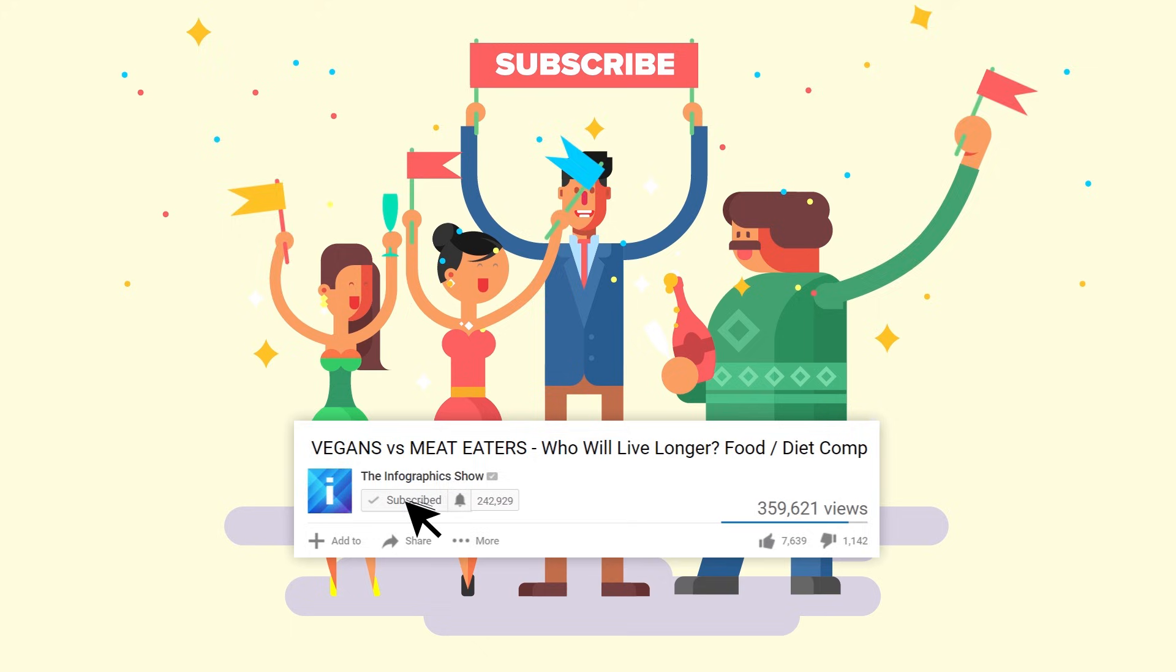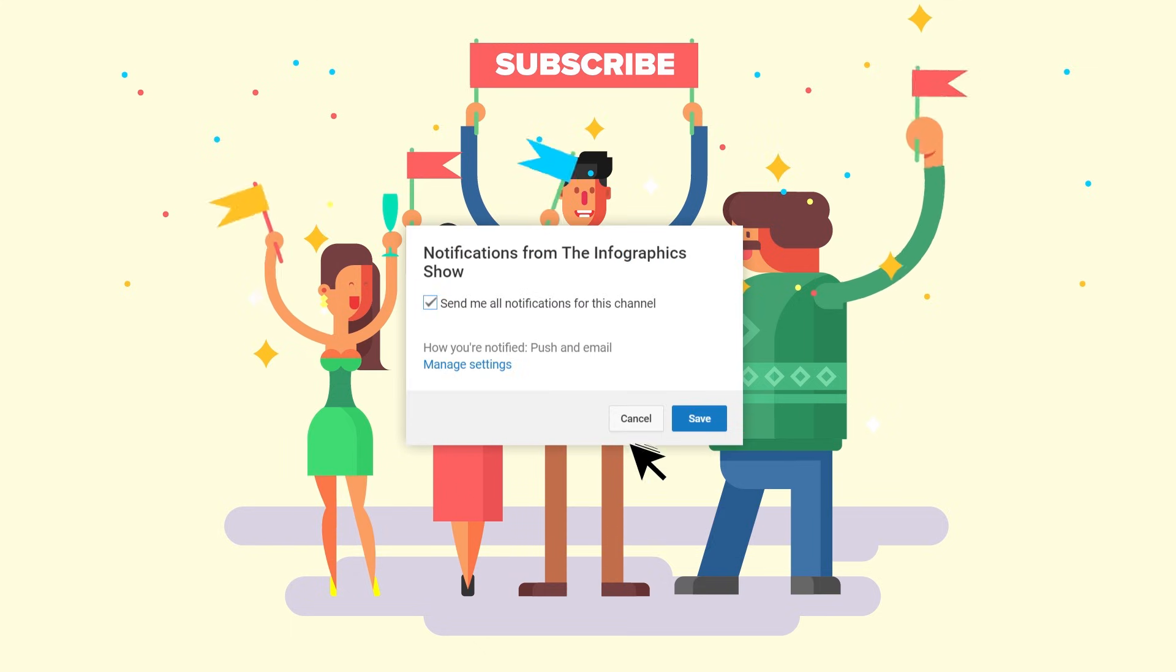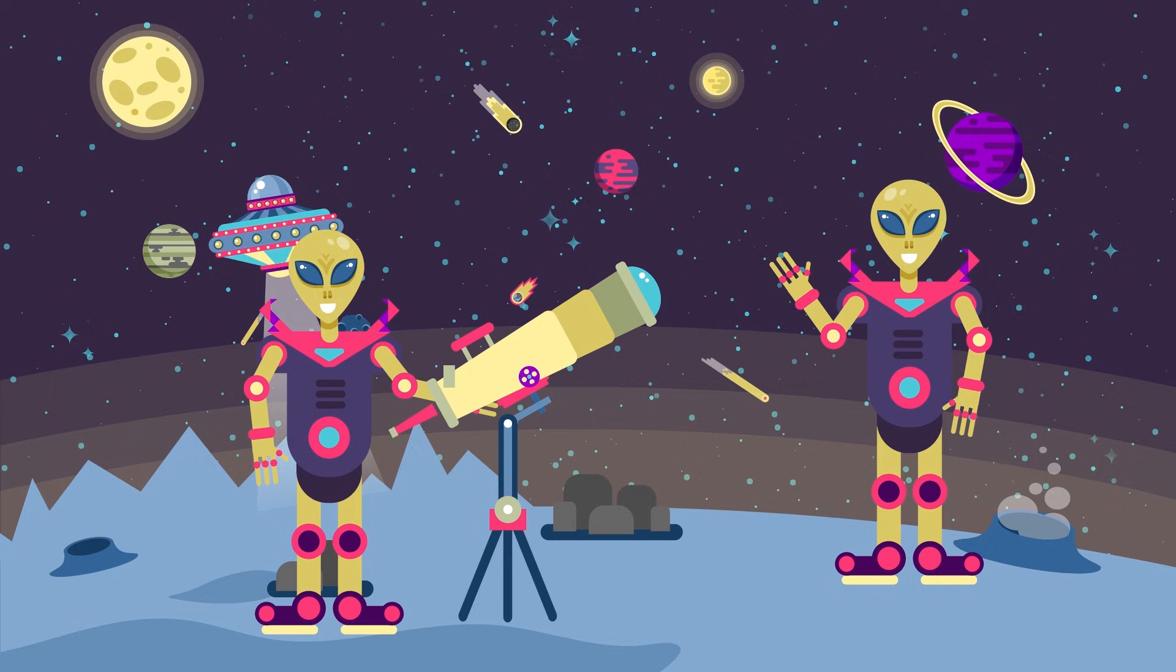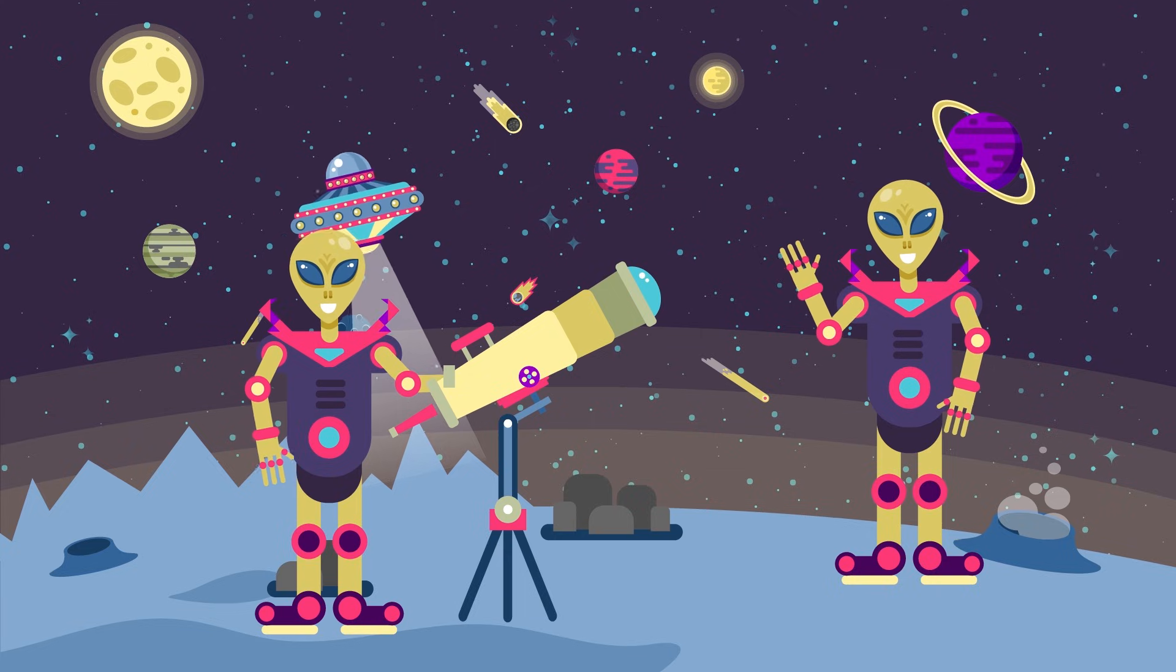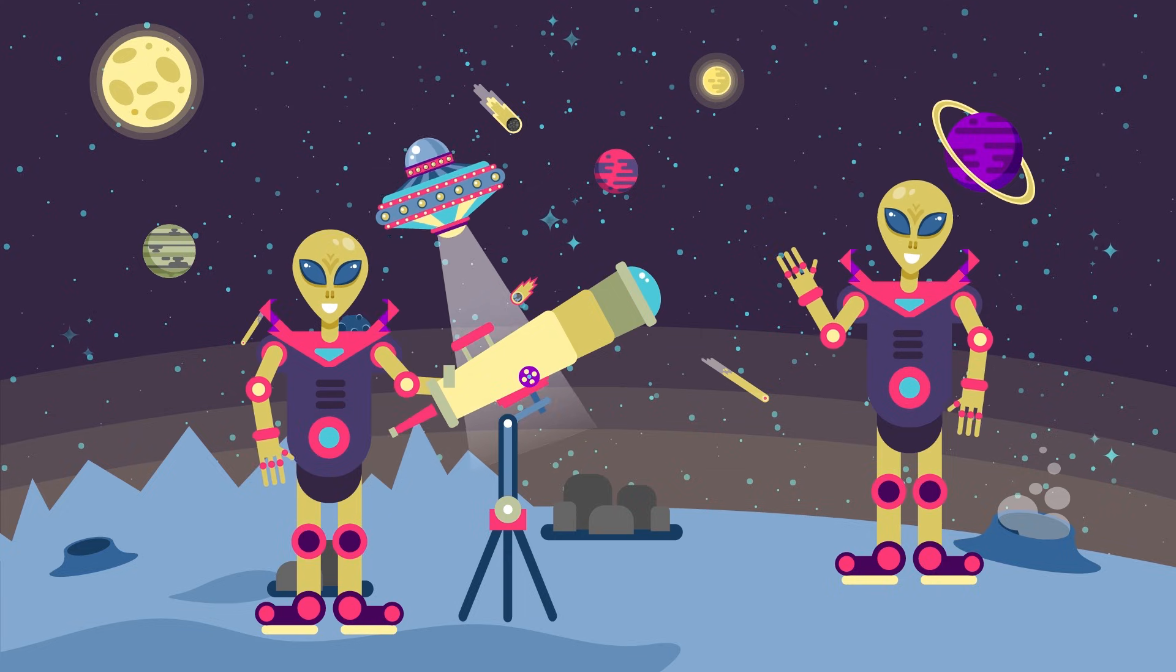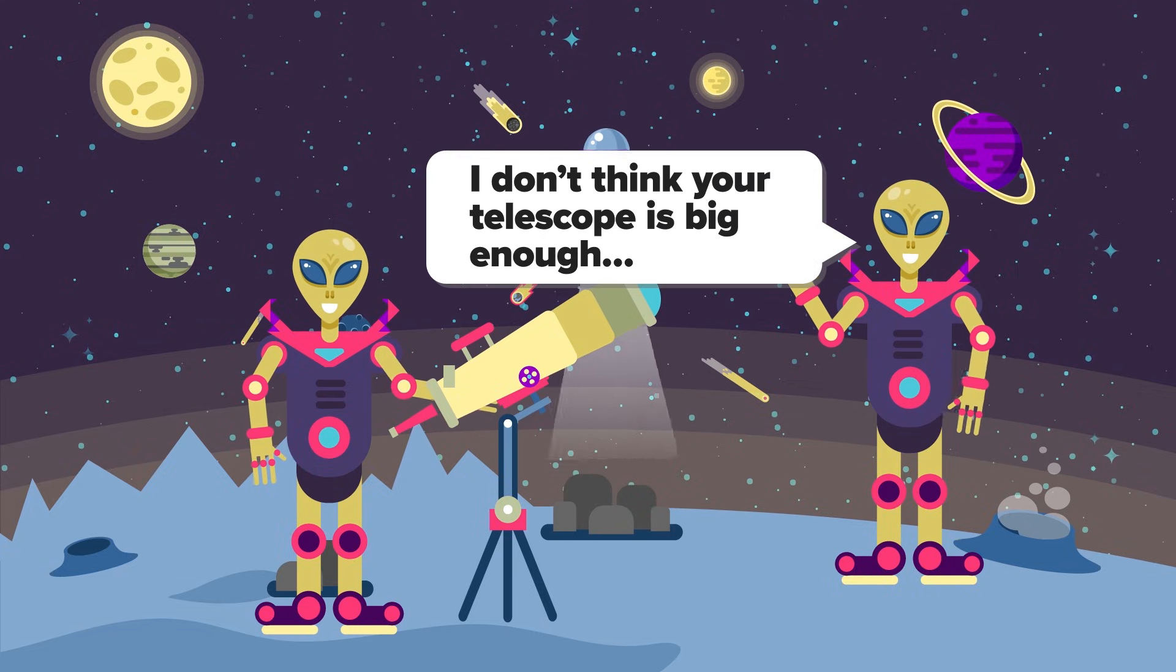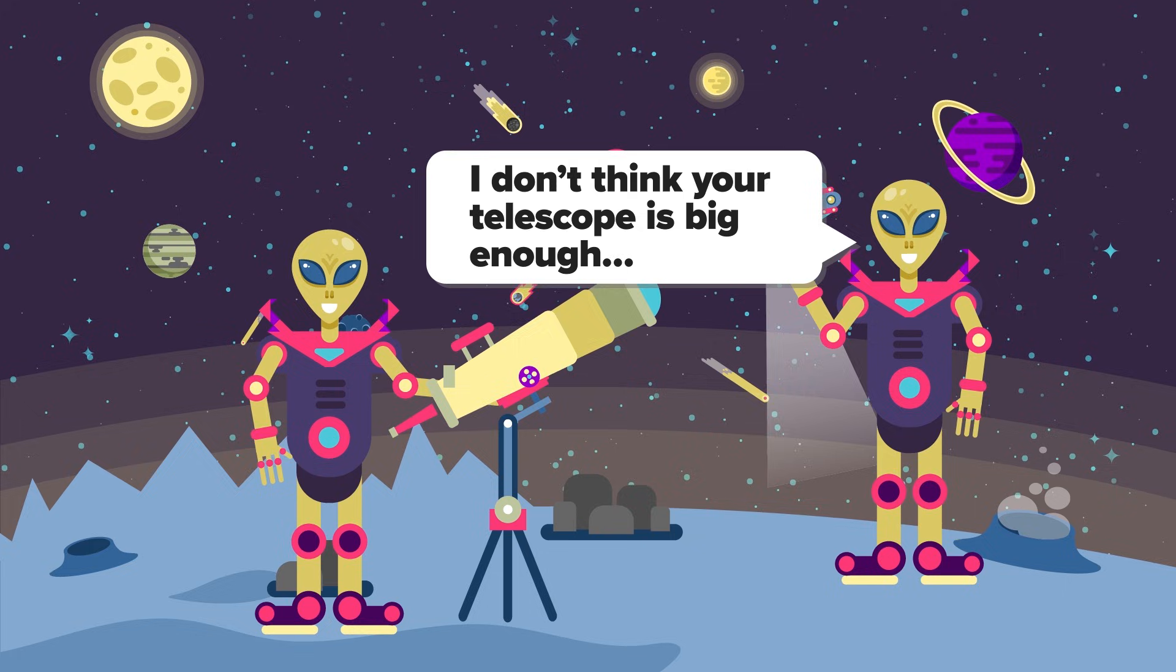Don't forget to subscribe and click the bell button so that you can be part of our notification squad. In theory, the answer is yes. Light that left Earth 65 million years ago is now 65 million light years away, so if aliens knew where to point their telescope, they could see dinosaurs. But is it possible for anyone, even a super technologically advanced alien, to build a telescope powerful enough?